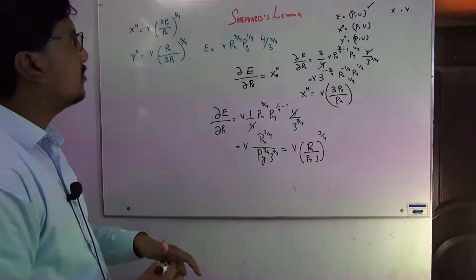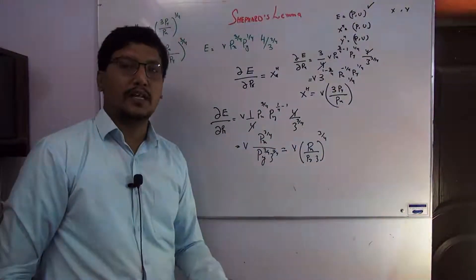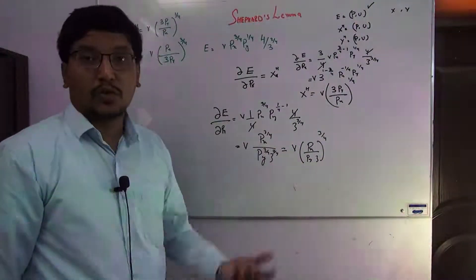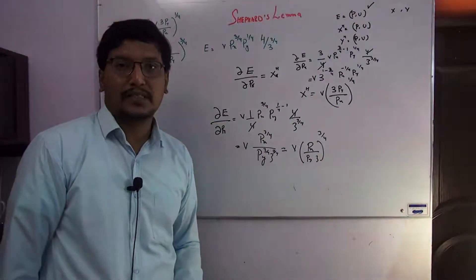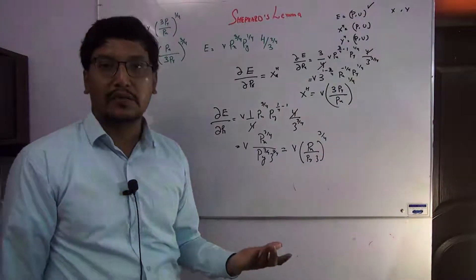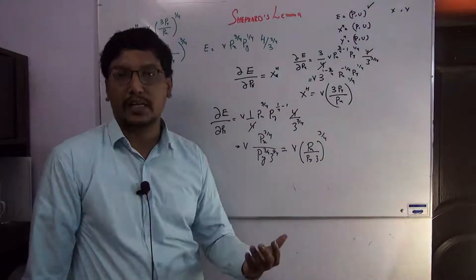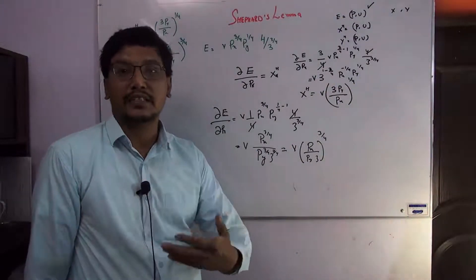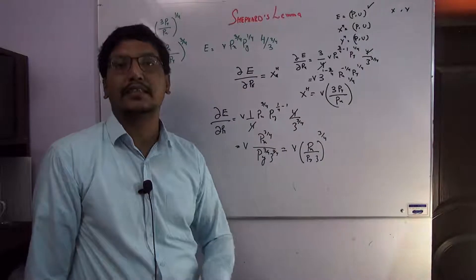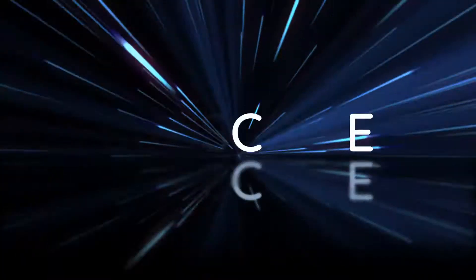So this is the Shephard's Lemma property: take the partial derivative of the expenditure function with respect to a commodity's price, and you directly obtain the demand function for that commodity.